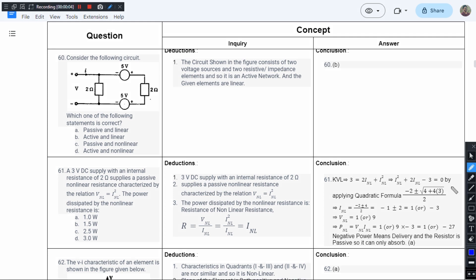This is question number 60 from chapter 1 of J.B. Gupta's book. The question asks: consider the following circuit, which one of the following statements is correct?